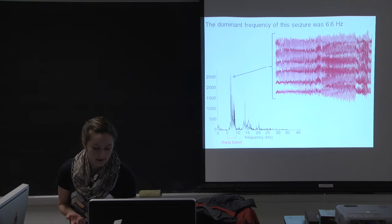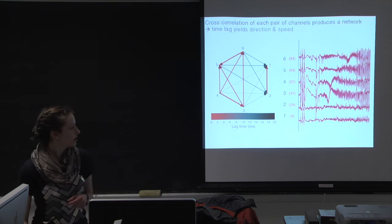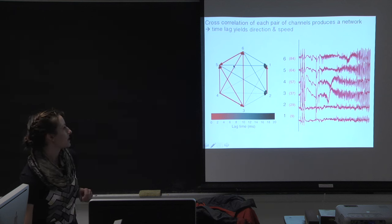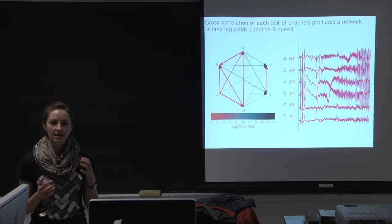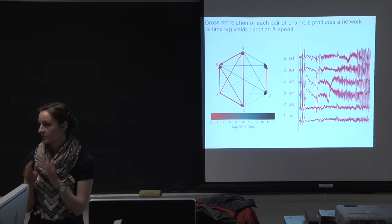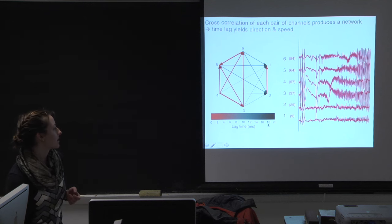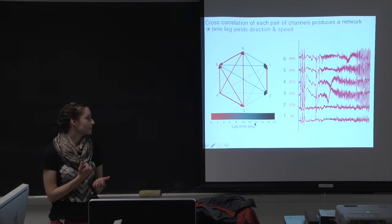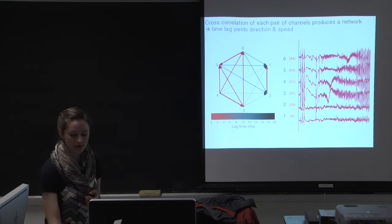Doing cross-correlation of each pair of channels, I can build a graph or network. I'm plotting them in a hexagon. Each arrow represents the output of cross-correlation analysis — the direction of the arrow indicates whether the time lag is negative or positive, and the width of the arrow is the strength of the cross-correlation, the maximal connectivity strength between the two channels. From the time lag, we can also get a speed; these time lags in milliseconds likely represent direct synaptic connections in this very small network.